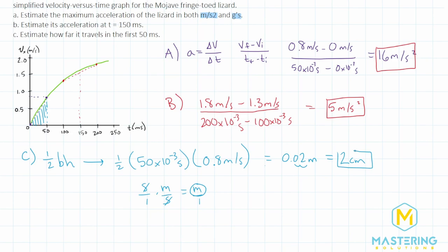So however, mastering physics wants you to give the answer either in meters or in centimeters, look closely at that so you don't get it wrong over something like that. But it's either 0.02 meters or 2 centimeters and 5 meters per second squared at 150 milliseconds and 16 meters per second squared for the maximum acceleration of the lizard.